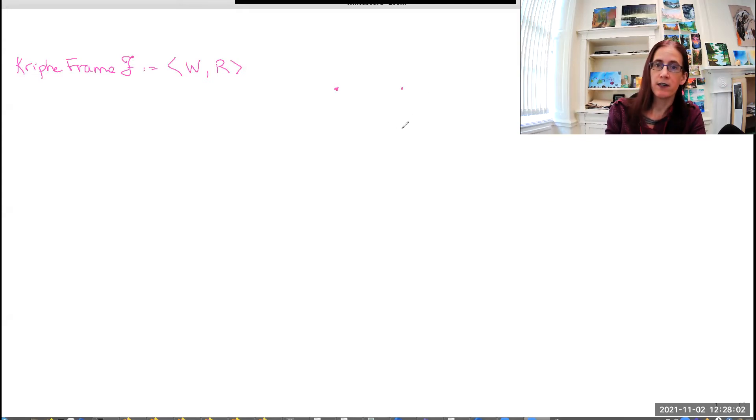So we have this very convenient way of drawing these little dot and arrow diagrams so that we can say things like, if this is W and this is W prime, then W prime is accessible to W, and so is W 2 prime, but unless we have an arrow going from this W to, oh, let's call this one X, X is not accessible from W. So these are the frames that we've got in the background.